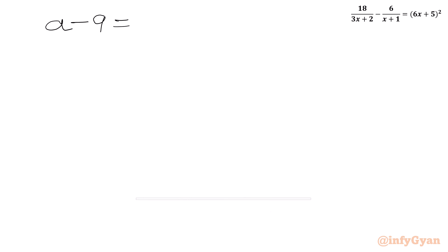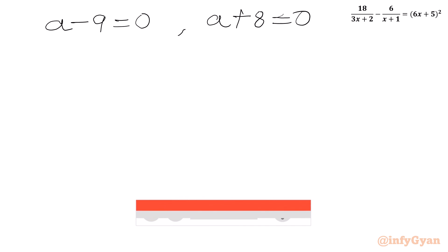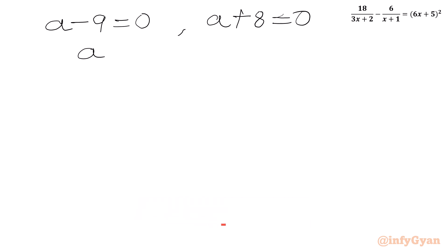So (a − 9)(a + 8) = 0, giving either a − 9 = 0 or a + 8 = 0. Therefore a = 9 or a = −8, where a = u².